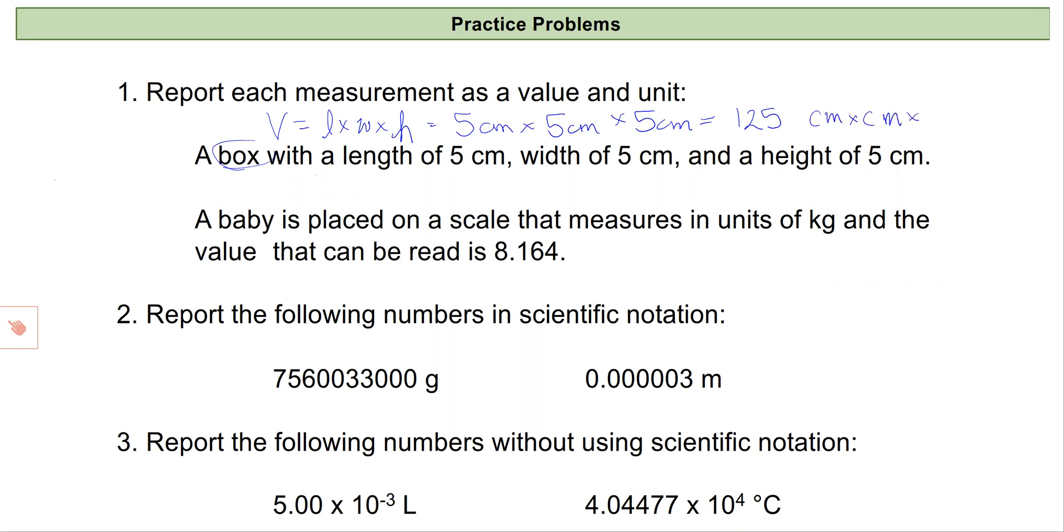We can think of units like variables, so if I had x times x times x I would call that x cubed. I'll do the same thing for my centimeter units and I'll report this value as the numeric number 125 and the units associated with that number, which is centimeters cubed, which is a unit of volume.